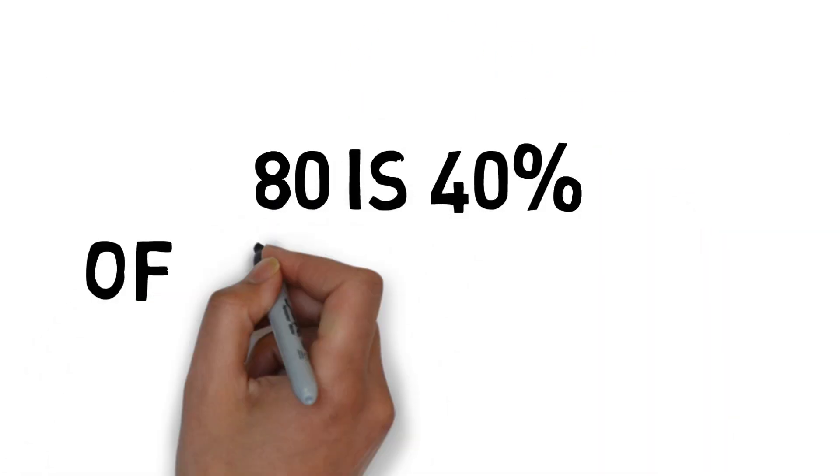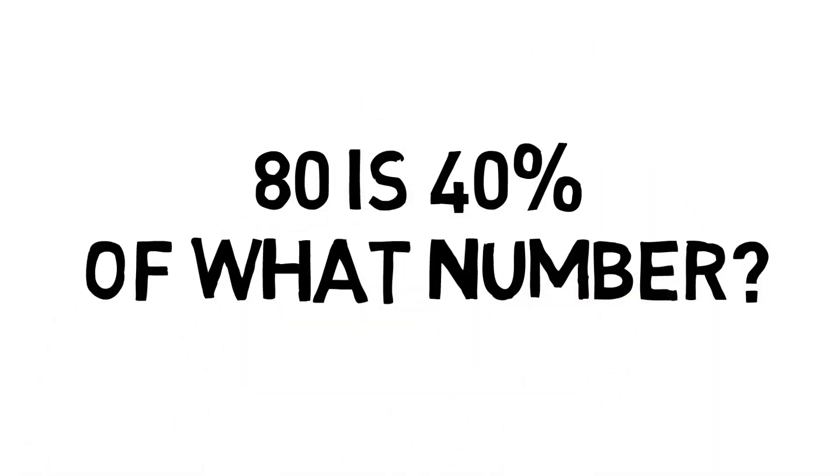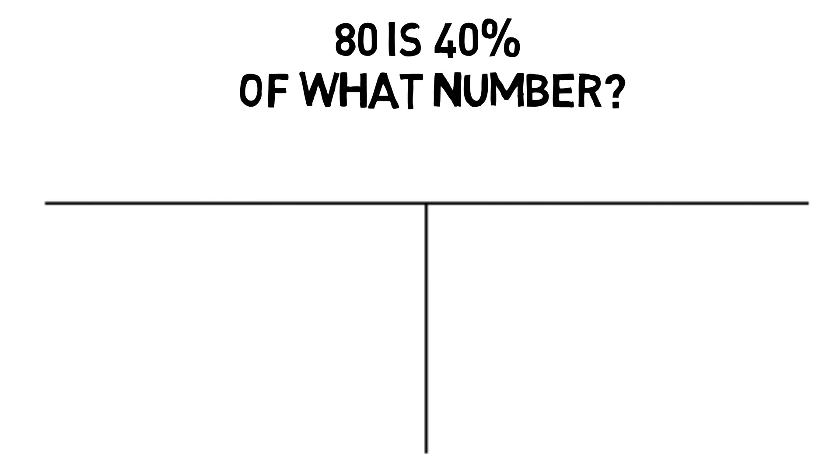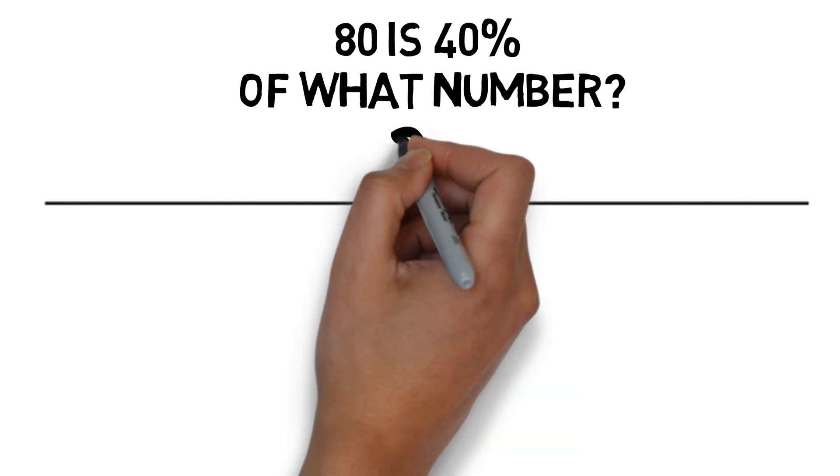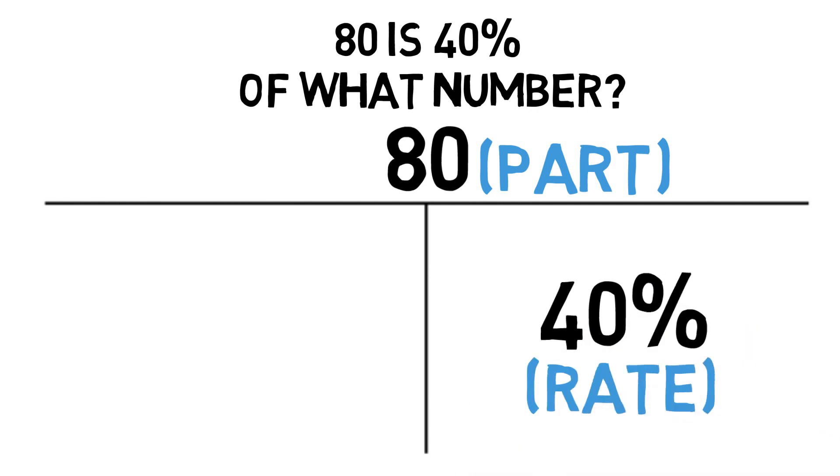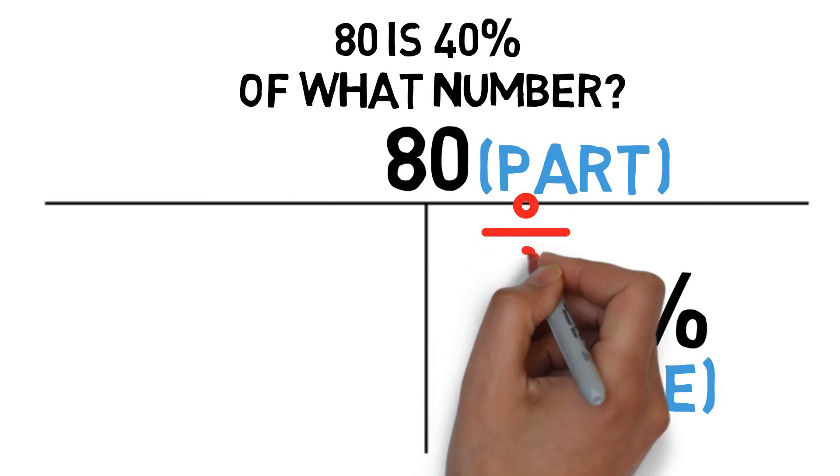The question might be, 80 is 40% of what number? In this case, 80 is a smaller part of a larger number, what is that larger number? So 80 would be the part, and goes up on top. Our rate is 40%, which goes on the bottom right. And our formula says to take the top number and divide by the bottom number.